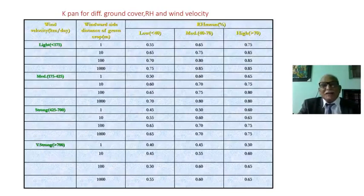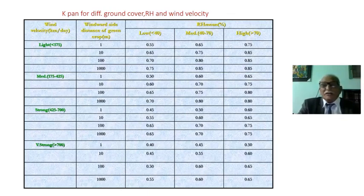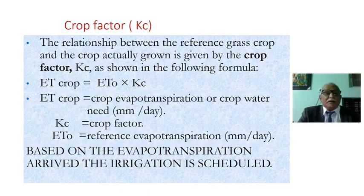Relative humidity — RH — is classified as low (less than 40), medium (40–70), and high (more than 70). For light wind, medium wind, strong wind, and very strong wind, these are the K-pan values for different ground cover and RH conditions. We also discussed several types of crop factor Kc.